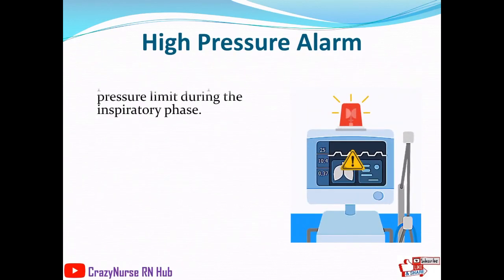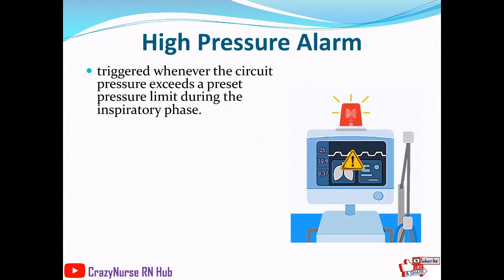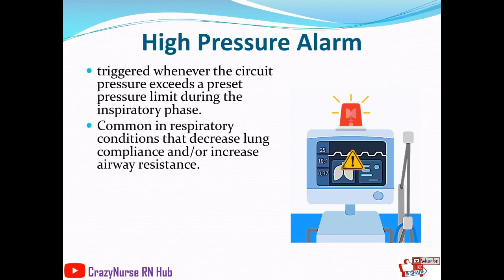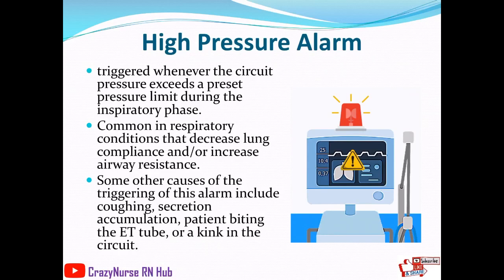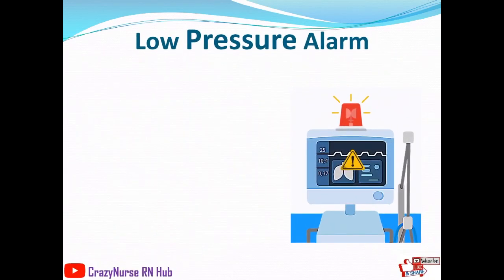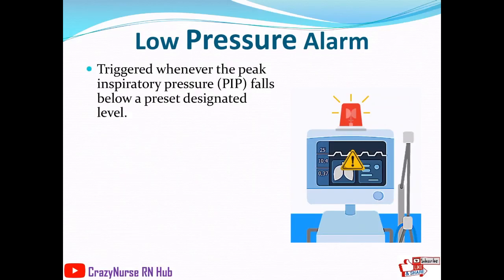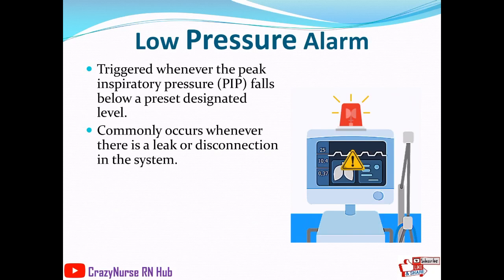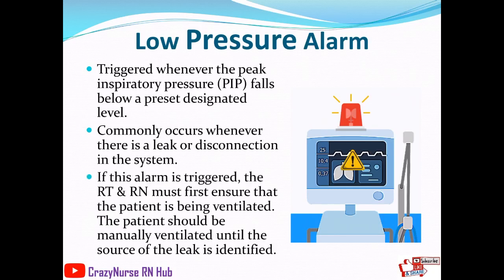The high pressure alarm is triggered whenever circuit pressure exceeds a preset limit during the inspiratory phase, common in conditions that decrease lung compliance or increase airway resistance. Other causes include coughing, secretion accumulation, patient biting the ET tube, or a kink in the circuit. The low pressure alarm is triggered when peak inspiratory pressure falls below a preset level, commonly due to a leak or disconnection. The respiratory therapist and registered nurse must ensure the patient is being ventilated and manually ventilate until the source of the leak is identified.